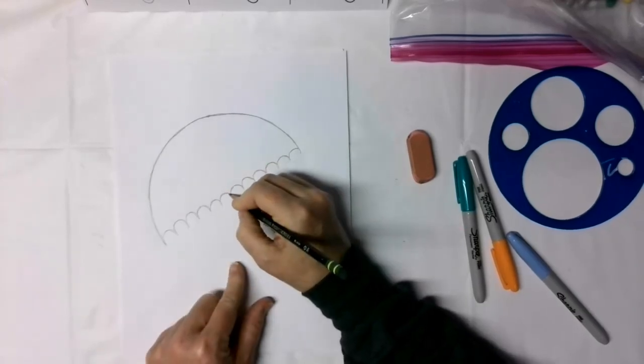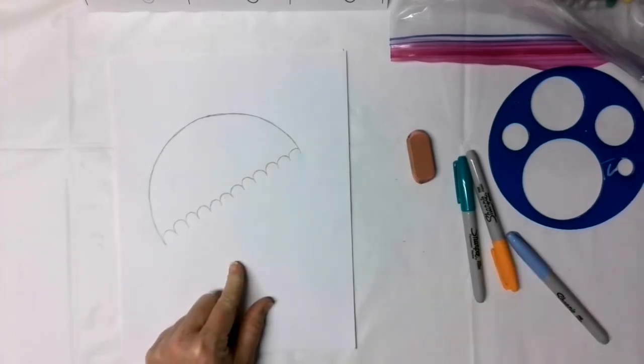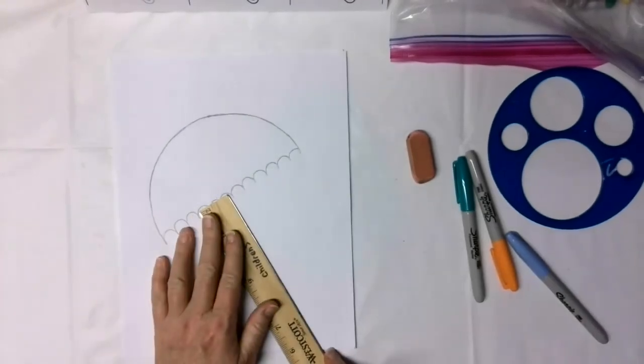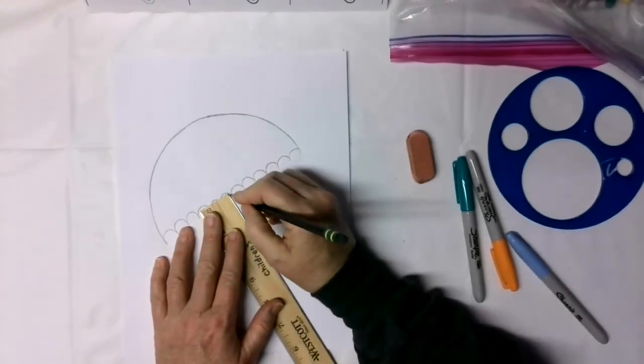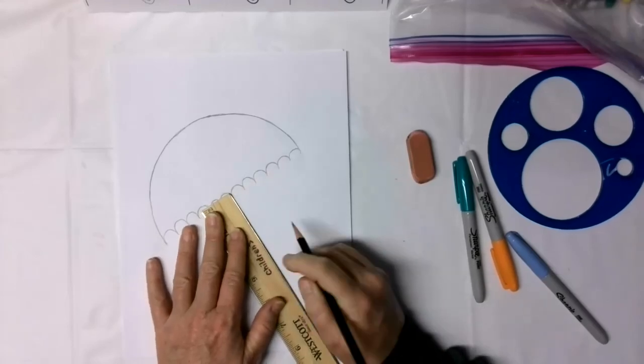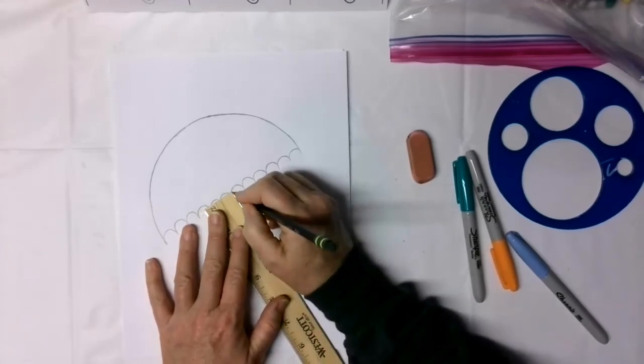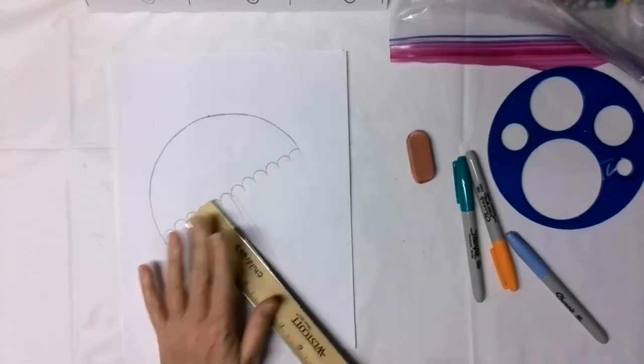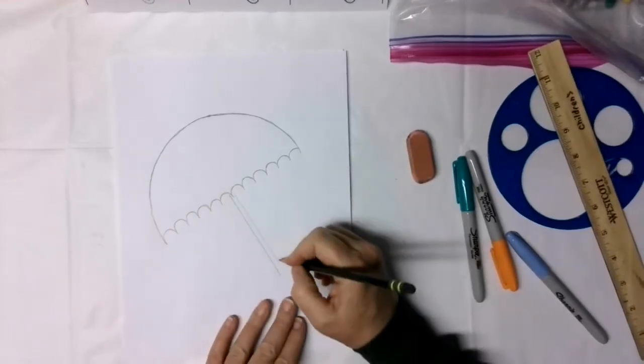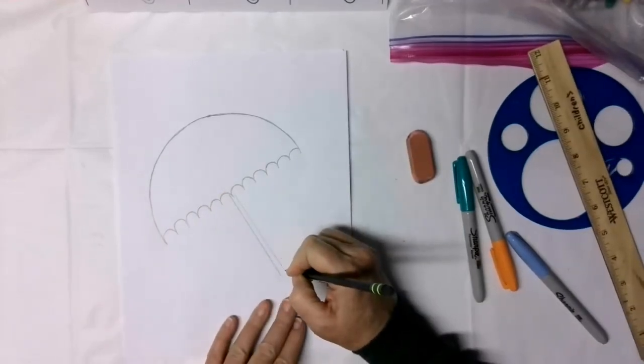So I'm going to start. Actually since I do have my ruler here, we're going to use it. So we're going to do it as close to the middle as we can. And just draw two straight lines down. And that will be the stem of our umbrella.